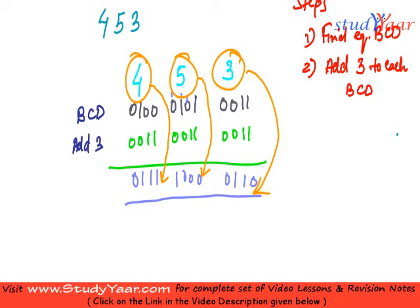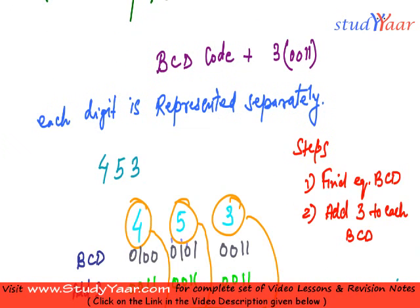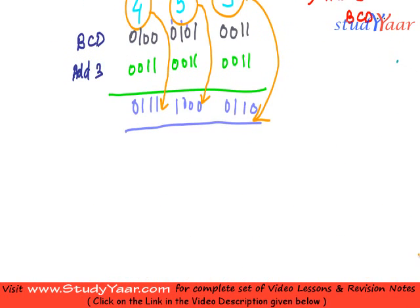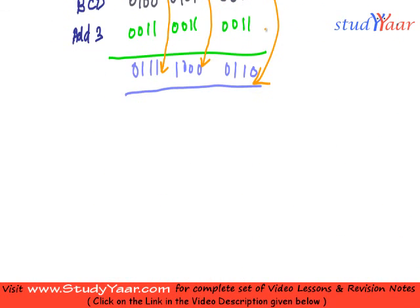So that's how we convert a decimal number to an equivalent XS3 code.